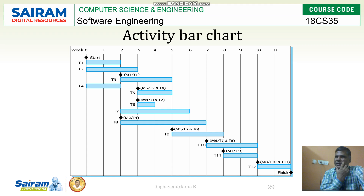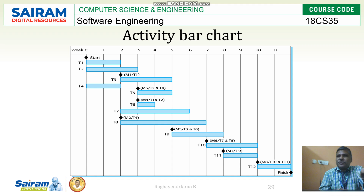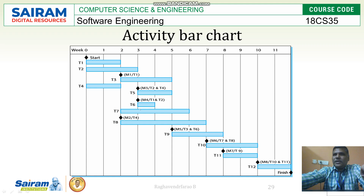T7 does not have any dependencies, so it can start from the second week, and T8 also. Now T4 is depending on M2 — the milestone M2 is here. So model 2, T4 is getting completed. The milestone is already met, and according to that it is going to start. Here T3 and T6: once T6 is completed, T9 is going to start in the fifth week.